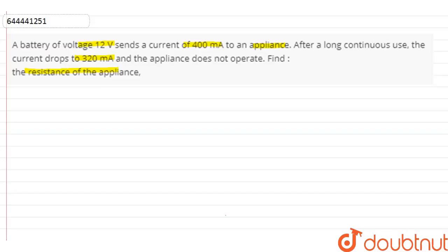The question is: A battery of voltage 12 volts sends a current of 400 mA to an appliance. After a long continuous use, the current drops to 320 mA and the appliance does not operate. Find the resistance of the appliance.